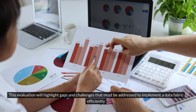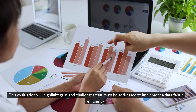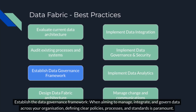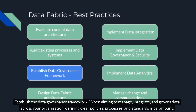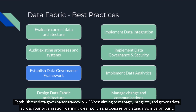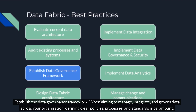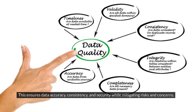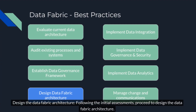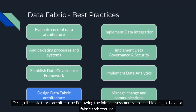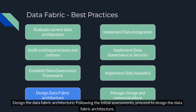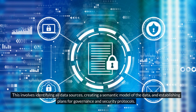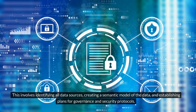Establish the data governance framework. When aiming to manage, integrate, and govern data across your organization, defining clear policies, processes, and standards is paramount. This ensures data accuracy, consistency, and security while mitigating risks and concerns. Design the data fabric architecture: following the initial assessments, proceed to design the data fabric architecture. This involves identifying all data sources, creating a semantic model of the data, and establishing plans for governance and security protocols. Implement data integration: with the data fabric architecture in place, connect various data sources both internally and externally. Integrate this data across your systems and users to create a unified view, pinpointing pertinent data sources for successful integration into the fabric and guaranteeing thorough coverage.